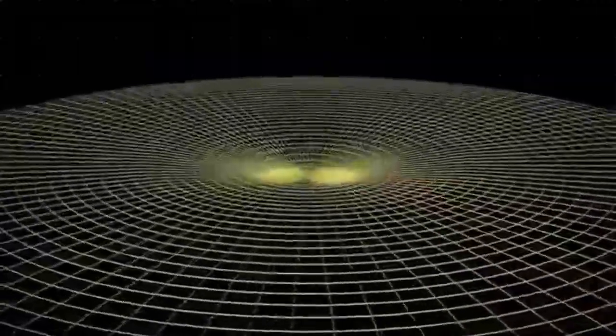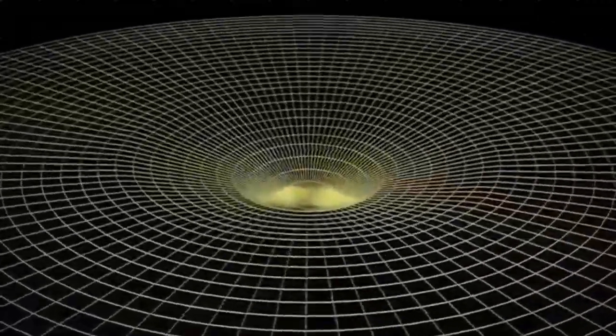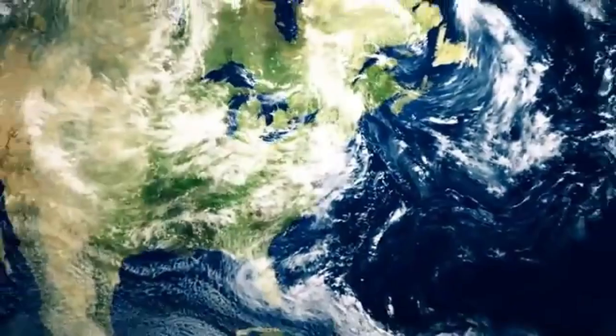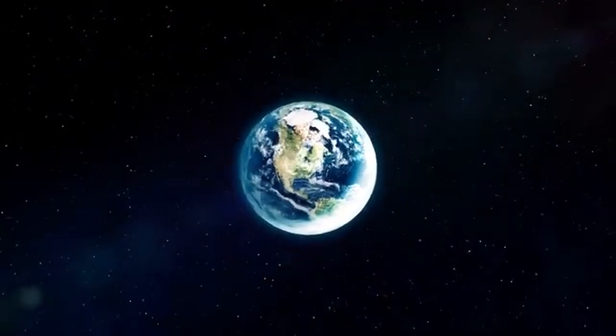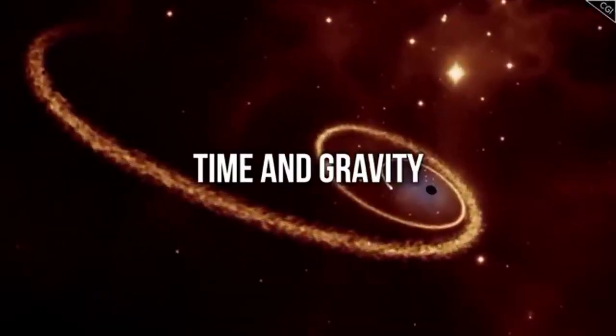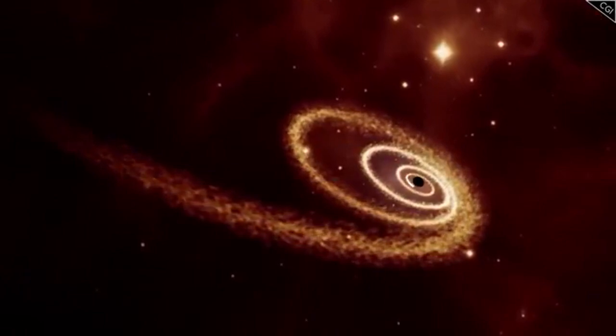Time dilation, where time slows down depending on motion, becomes more pronounced as you approach the speed of light. Imagine two identical twins, one on Earth and the other traveling into space at a significant fraction of the speed of light. When the space-traveling twin returns, they will be younger than their Earth-bound sibling. This twin paradox is a real consequence of time dilation.